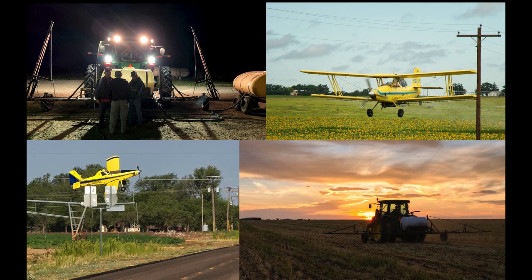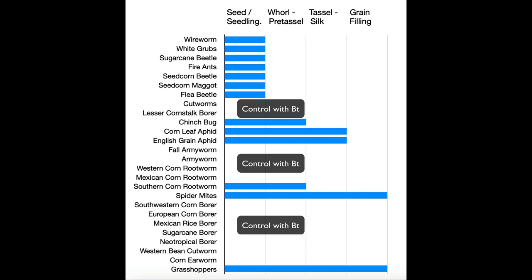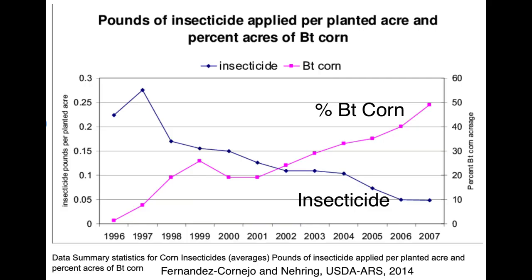Transgenic corn, or BT corn, can control all of the caterpillar pests in Texas and the western and Mexican corn rootworm, but not the southern corn rootworm. Check with your seed dealer to find the types that control only caterpillars, only rootworms, or both, depending on what you want. BT corn greatly simplifies insect control — it lets us avoid using insecticides for many of our pests, and this in turn preserves beneficial insects that often keep populations of other pests under control. This is why insecticide use in corn has gone down dramatically since the introduction of BT corn.